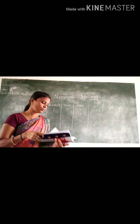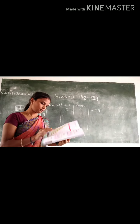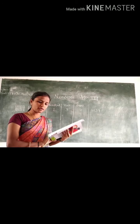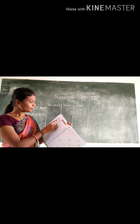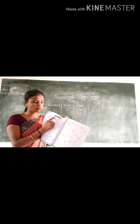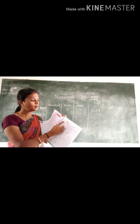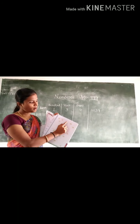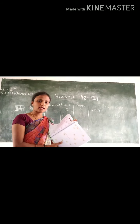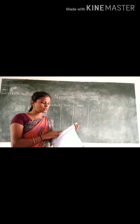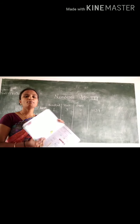Now, you have to work on page numbers 14 and 15. You have to complete exercise 1.2. Write the numbers from 201 to 300, from 301 to 400, from 201 to 500, and from 501 to 600. In the next class, I shall teach you about the number before, number after, and between numbers. Thank you.